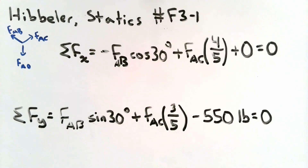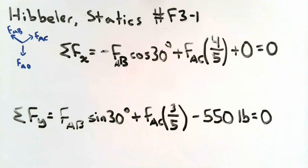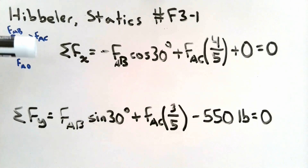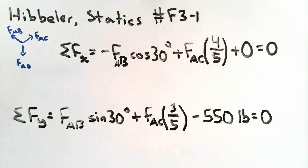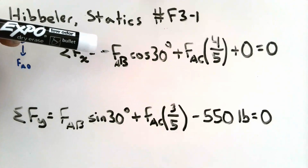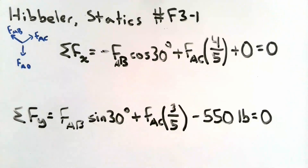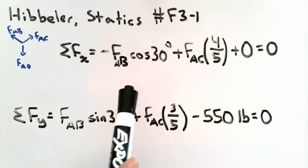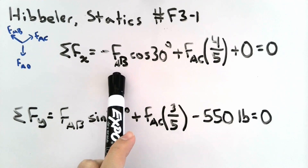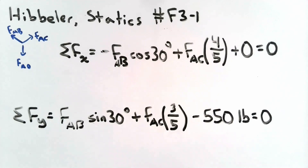There are two methods for solving systems of equations: adding equations to cancel a variable, or substitution. Based on student feedback, we'll use substitution. First, we find a relationship between the two unknowns using one equation. Since the sum of forces in the X direction has the fewest terms, we'll use that equation to solve for force AB as a function of force AC.